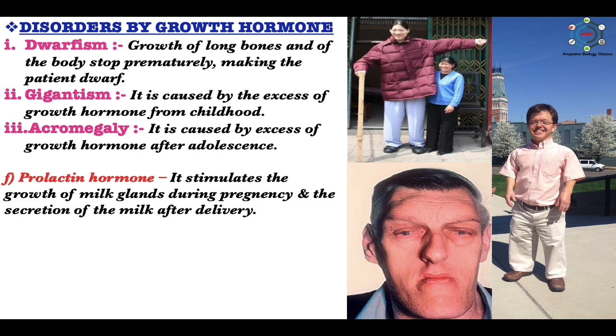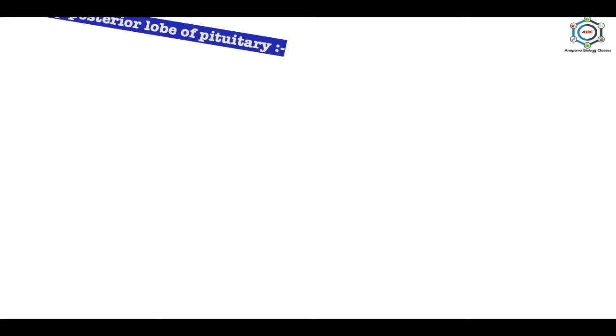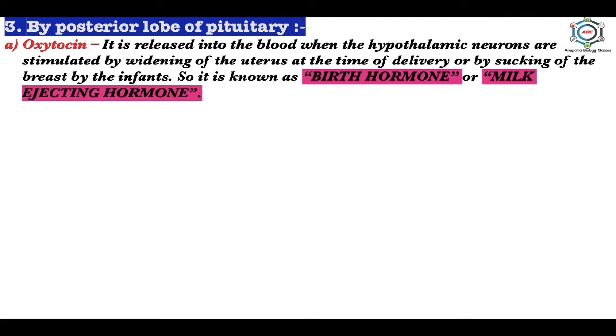The inhibition of prolactin is removed during nursing by nerve impulses produced when the infant sucks on the nipple. The anterior intermediate lobe of the pituitary secretes melanocyte-stimulating hormone (MSH), which stimulates the synthesis of black pigment melanin in the skin.